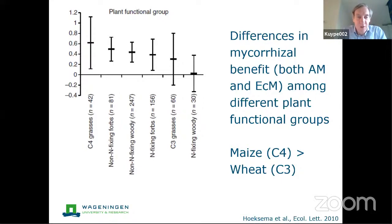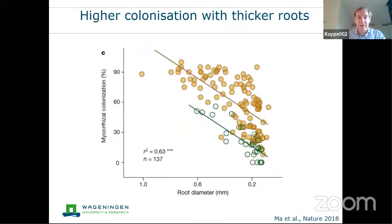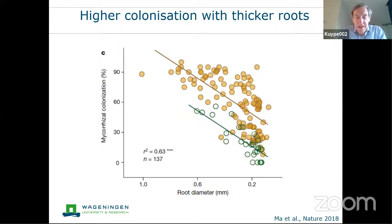If you compare the root systems of maize and wheat, you immediately see that maize has relatively thick roots while wheat has much thinner roots. Plants with thicker roots generally have a larger mycorrhizal effect, as we saw yesterday. This is not only a difference between species but also within species, meaning it can be used in plant breeding programs to increase the level of mycorrhizal colonization.